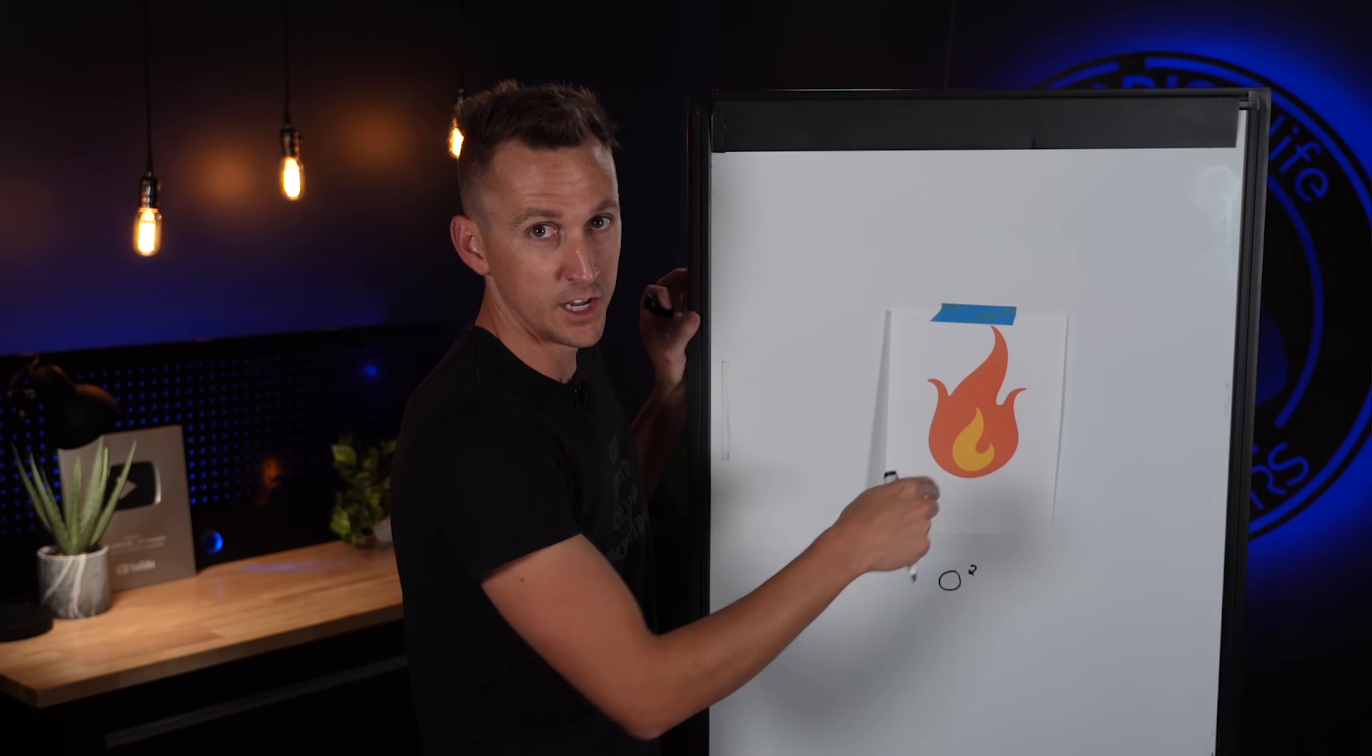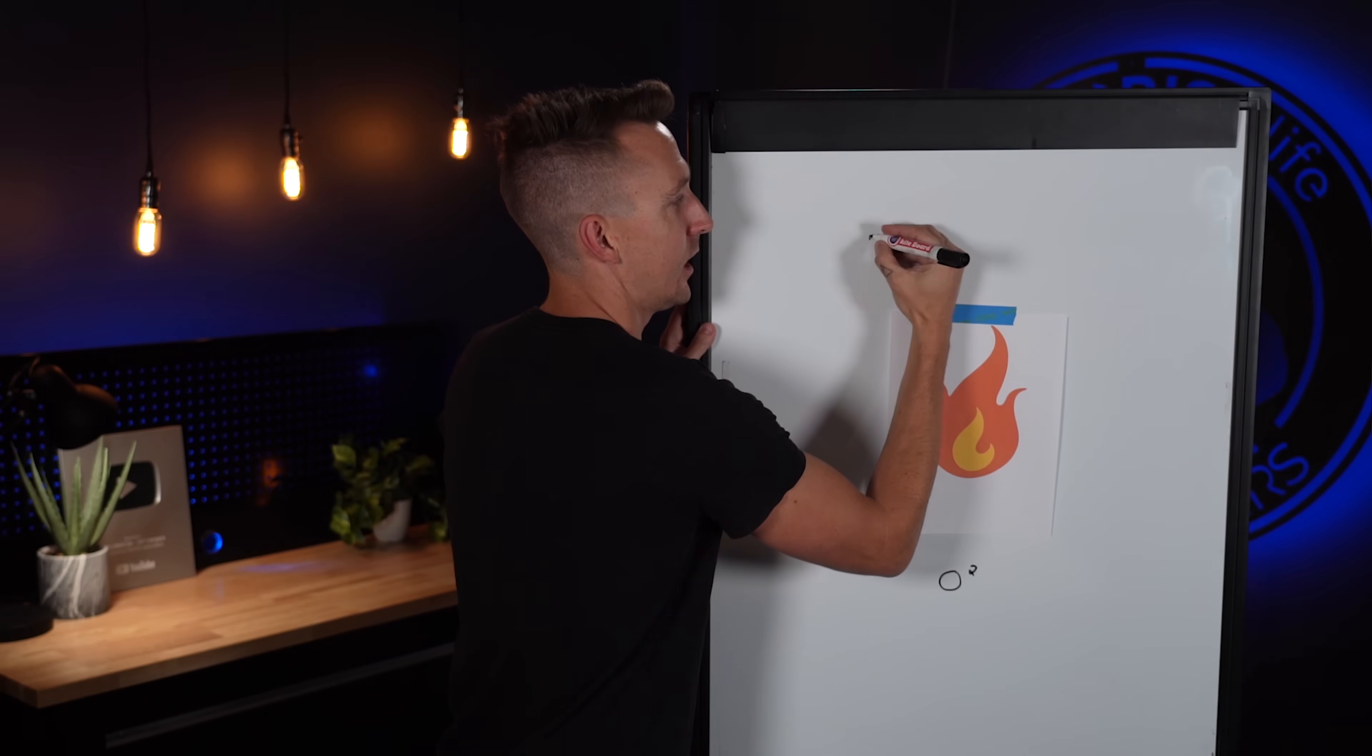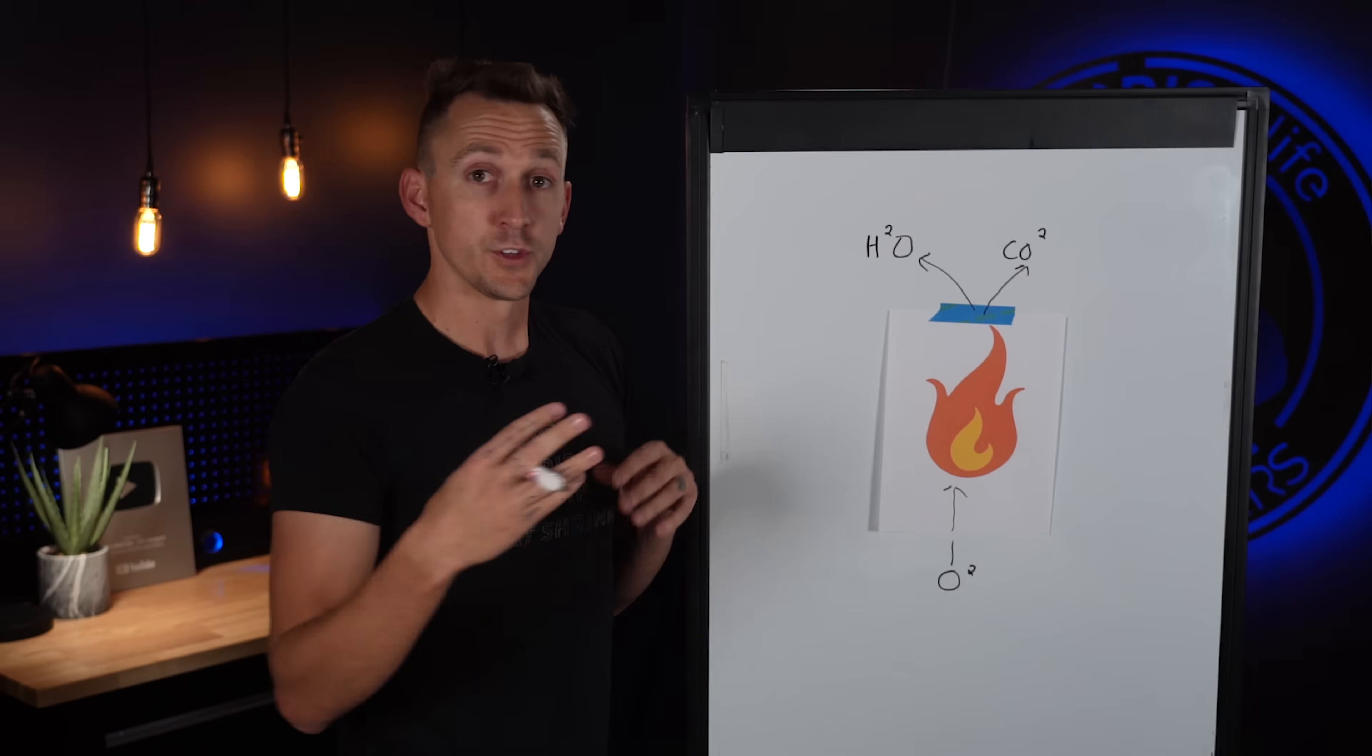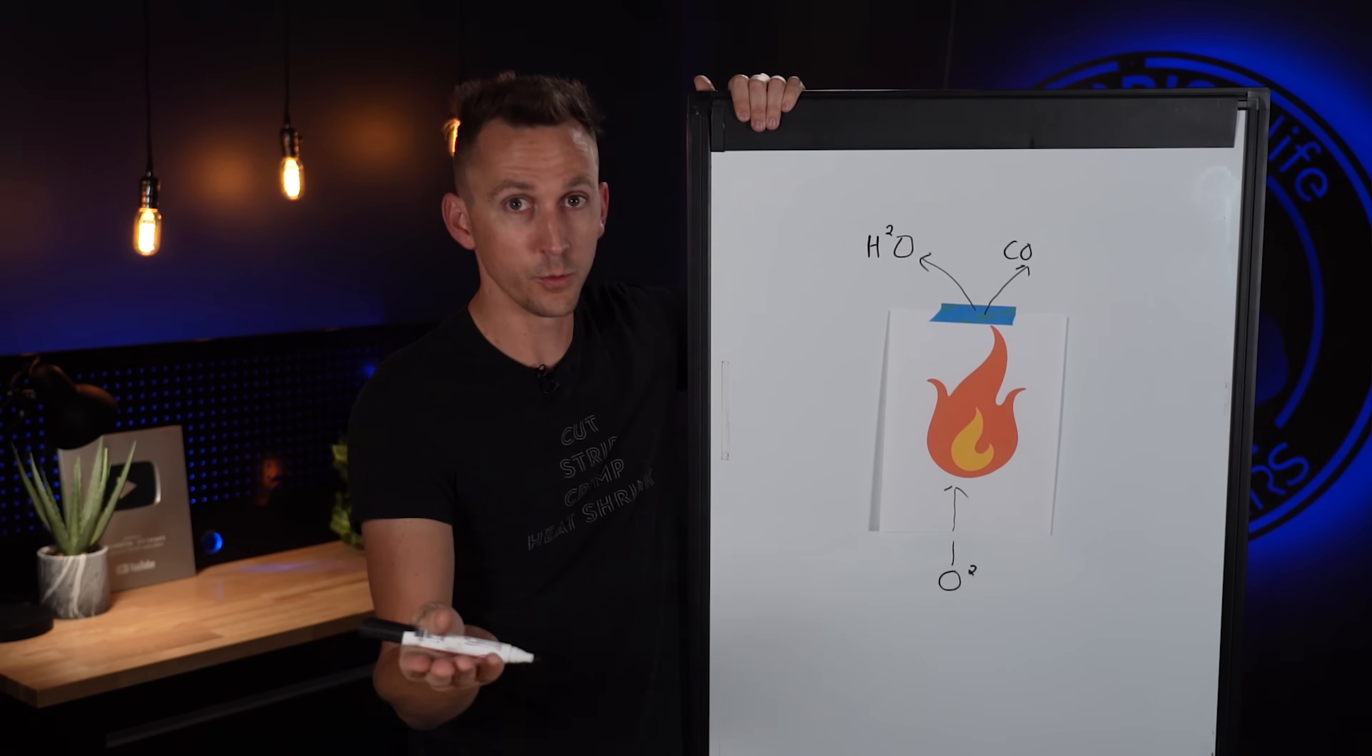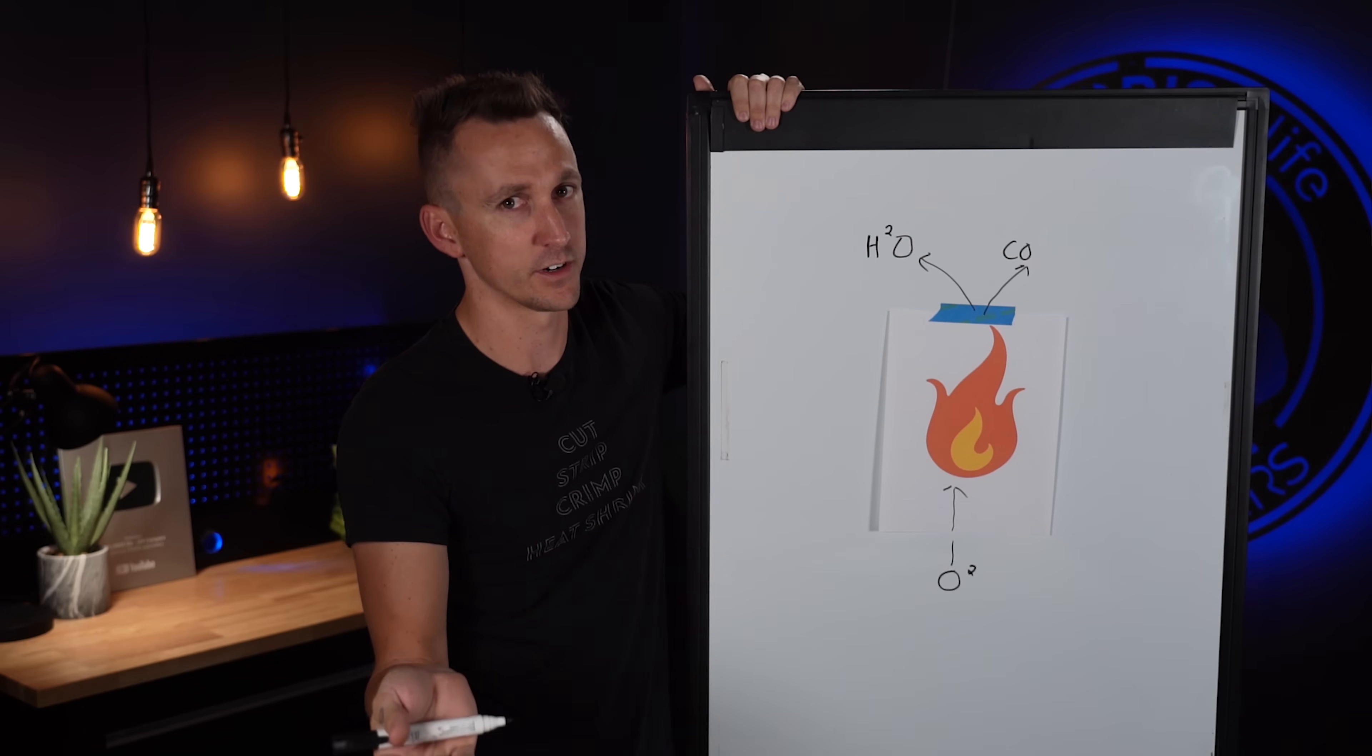Whenever the fire burns if it was complete combustion which means that there's plenty of oxygen, plenty of heat, and plenty of fuel, we're going to have H2O which is water and CO2 which is carbon dioxide. So there's always going to be water coming out of combustion. Now CO2 can actually turn into CO which is carbon monoxide which is the poisonous one if we don't have enough oxygen going into our fire creating less than perfect combustion.